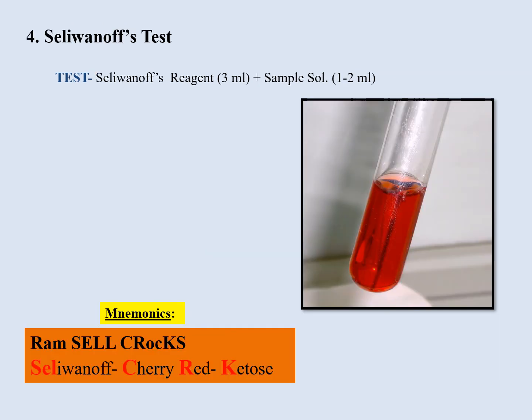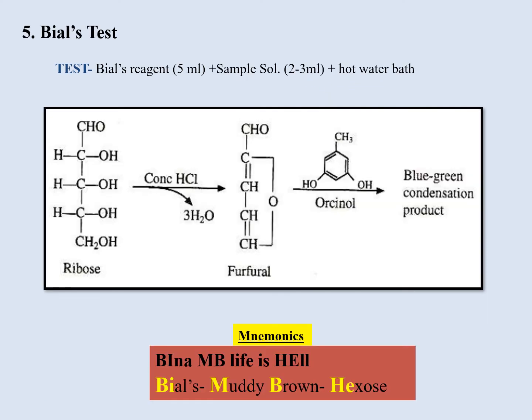Next is Seliwanoff's test. I have given a picture showing the cherry red color in the test tube. When you perform this test, you get a cherry red color which shows the presence of ketose. The mnemonic is 'Ram cells croc' — 'Cell' is for Seliwanoff, 'CR' stands for cherry red, which is the color obtained, and 'KS' stands for ketose, which is what the test confirms the presence of.